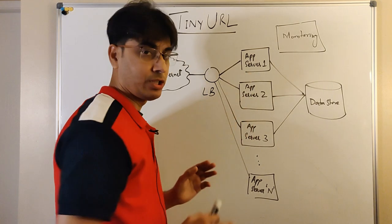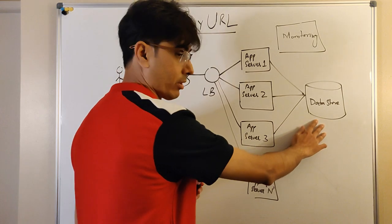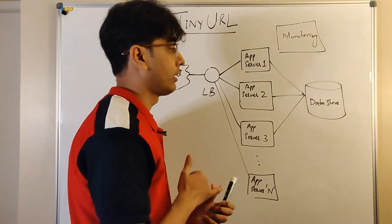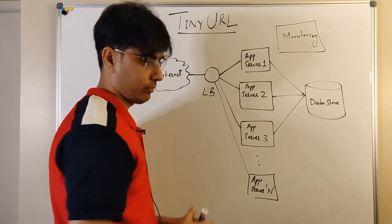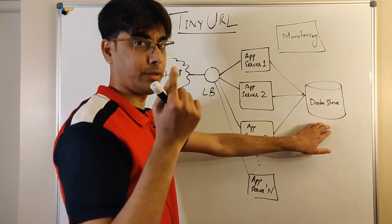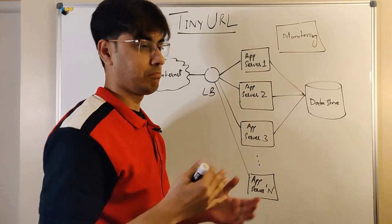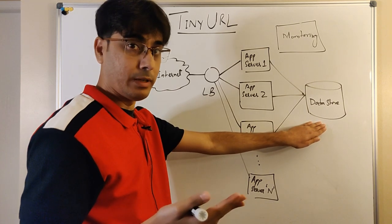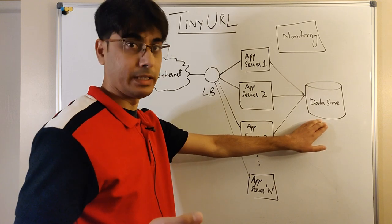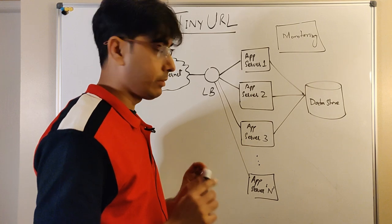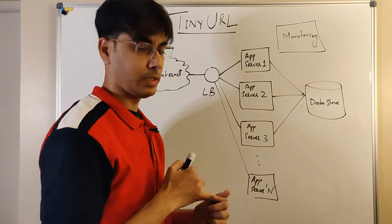By introducing three application servers we've ensured high availability and scalability. However, unless our data store is also highly available, scalable, and durable, we cannot ensure the overall design meets those requirements. For example, if the data store runs on a single server, all read/write requests go there — it won't be highly scalable, it can go down, and if the hard disk crashes we lose all data. So the data store must also be highly available, scalable, and durable.